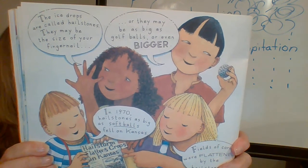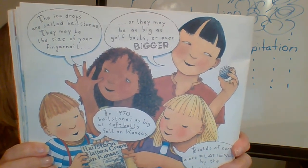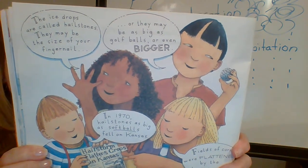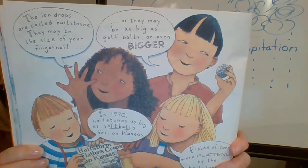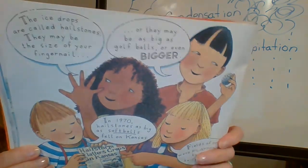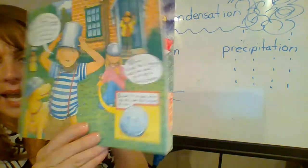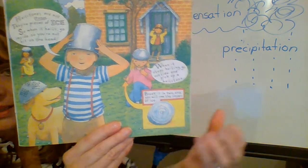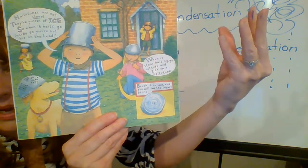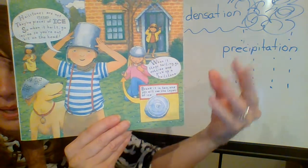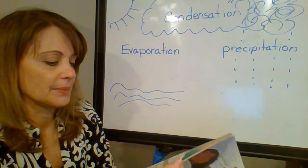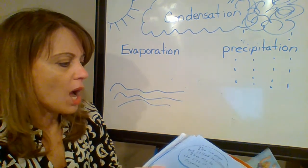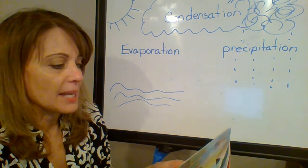Fields of corn were flattened by the hailstones. Hailstones are not stones — they're pieces of ice. So when it hails, go inside so you're not hit on the head. When it stops hailing, go outside and pick up a hailstone. Break it in two and you will see the layers of ice. Each of those layers means it started to come down, went back up, came back down, and went back up.